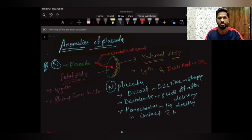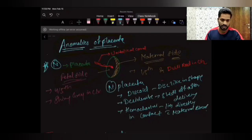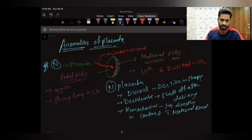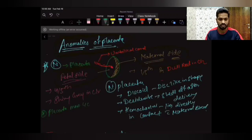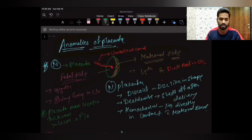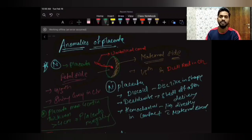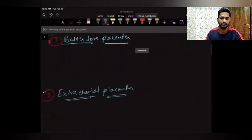These are the basics of the placenta we should know to understand its anomalies. The normal placenta thickness at term is 2.5 centimeters, and at maximum it can go up to 4 centimeters for a 40-week term baby. If it is more than 4 centimeters, we call it placentomegaly — that is the first anomaly.